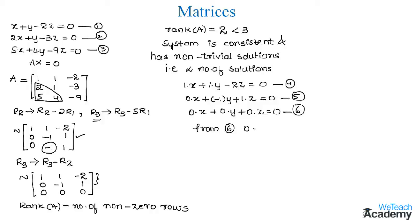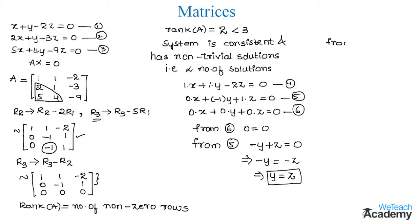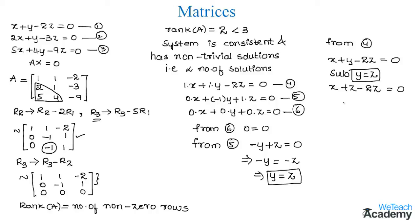From equation 6, we simply get 0 equals 0. From equation 5, minus y plus z equals 0, which implies minus y equals minus z, so the value of y equals z. Substituting y equals z into equation 4, which is x plus y minus 2z equals 0, we get x plus z minus 2z equals 0, giving x minus z equals 0, so x equals z.